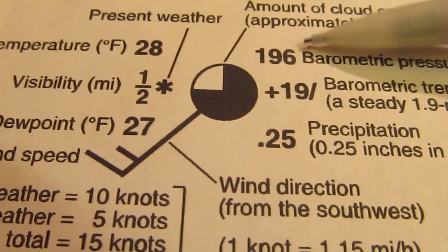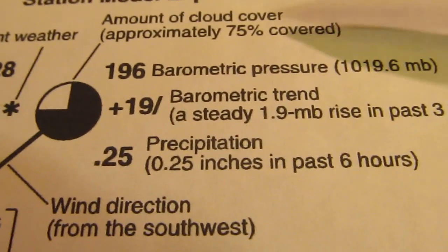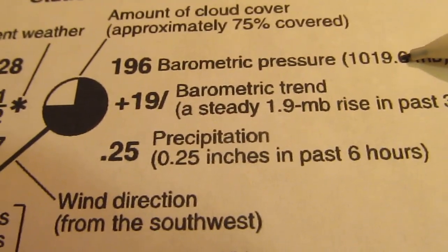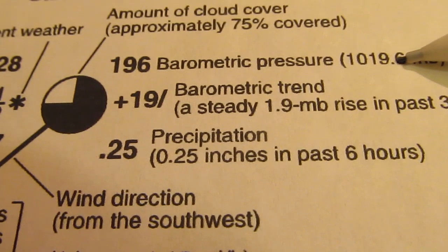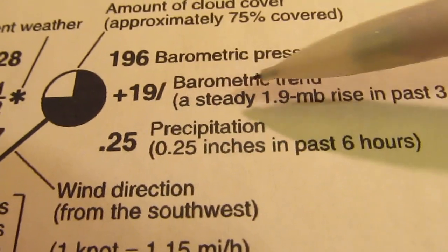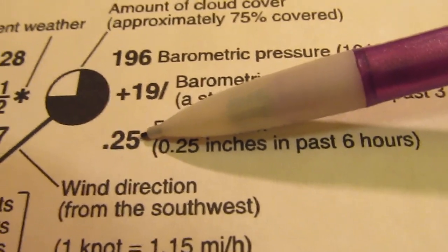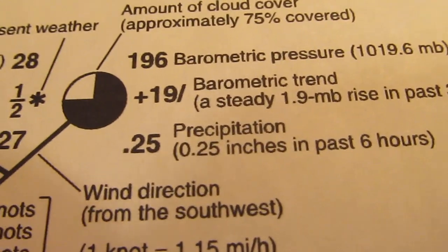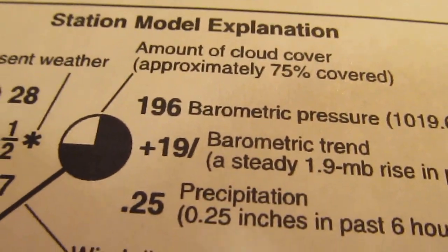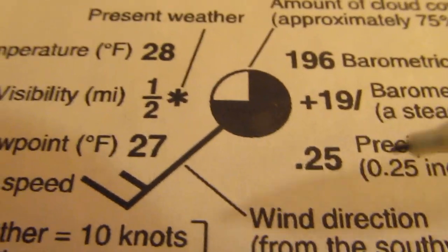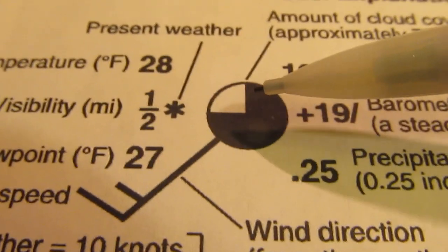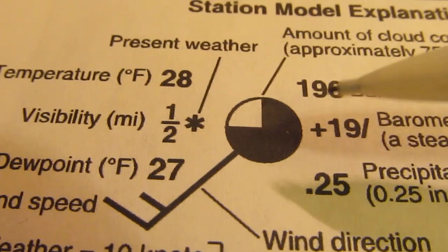All right, up here, we've got a three-digit number for barometric air pressure given in millibars. You can see that there's a conversion that we're going to need to do. That'll be in the next video. Same thing with barometric trend. Precipitation is given in inches. That's usually a decimal point. Other things you need to know about cloud cover. So you can see that there's 75% cloud cover because three-quarters of the circle are darkened.